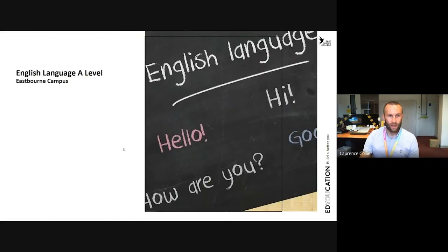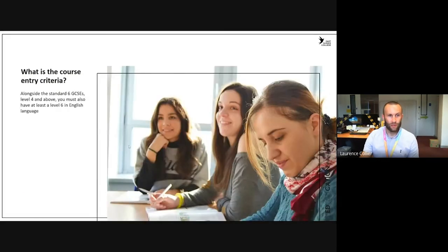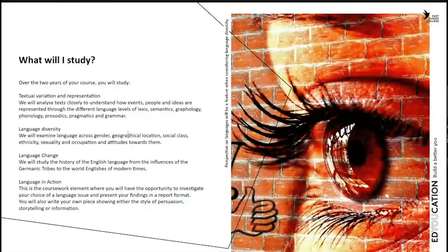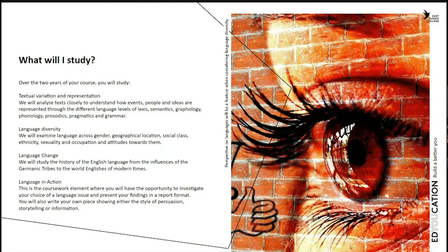On to English Language A-level. The course entry criteria is the standard six GCSEs at level four and above, but you must also have at least a level six in English language. Over the two years of the course, you will study textual variation and representation, where you will analyse texts closely to understand how events, people and ideas are represented through the different language levels of lexis, semantics, graphology, phonology, prosodics, pragmatics and grammar.